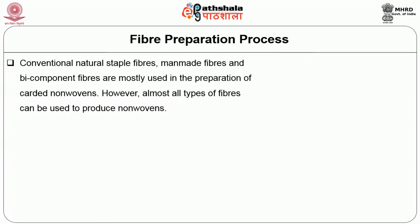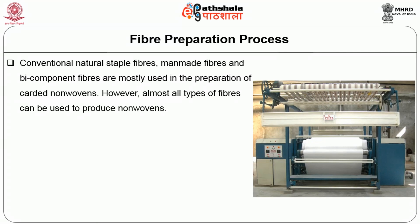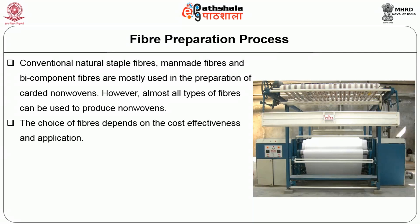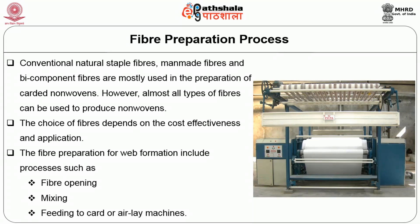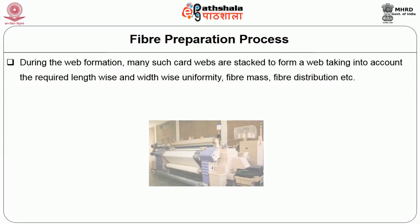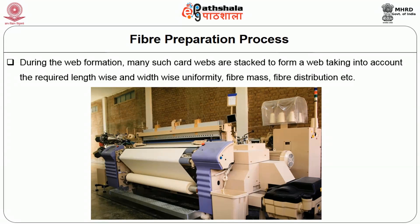The fiber preparation process: conventional natural staple fibers, man-made fibers and bi-component fibers are mostly used in the preparation of carded nonwovens. However, almost all types of fibers can be used to produce nonwovens. The choice of fibers depends on cost-effectiveness and application. The fiber preparation for web formation includes processing such as fiber opening, mixing and feeding to the card or air-lay machines. During the web formation, many such card webs are stacked to form a web taking into account the required lengthwise and widthwise uniformity, fiber mass distribution, fiber type, etc.